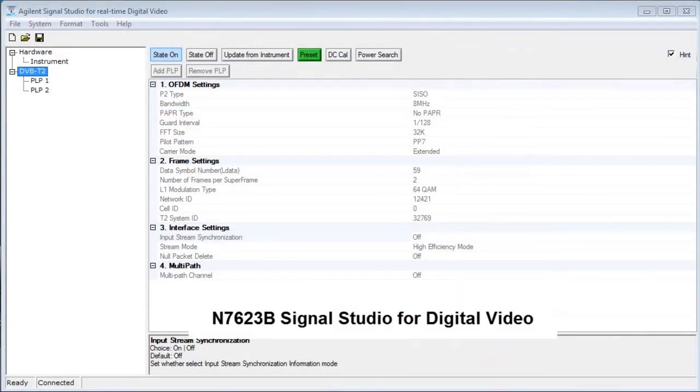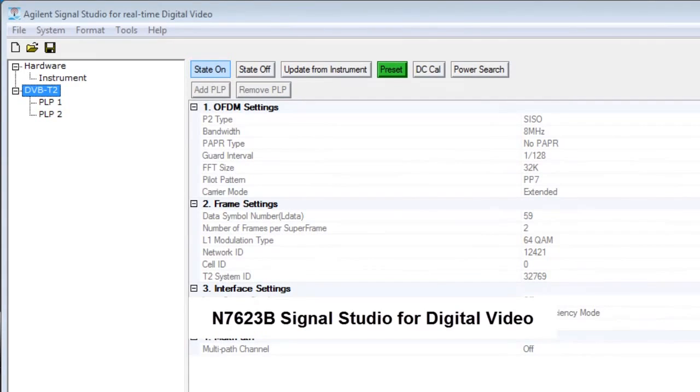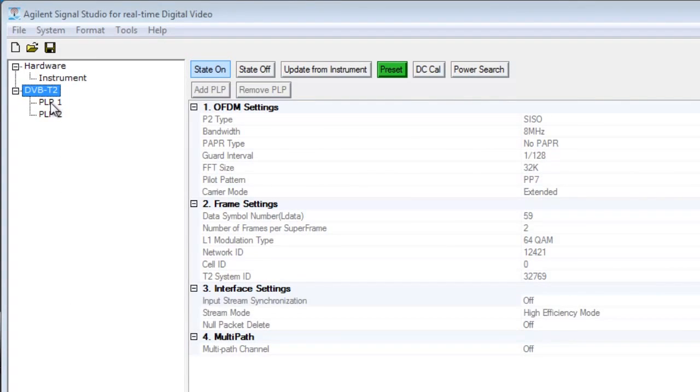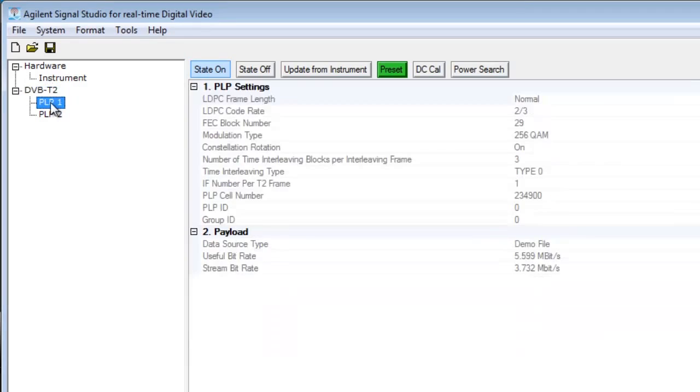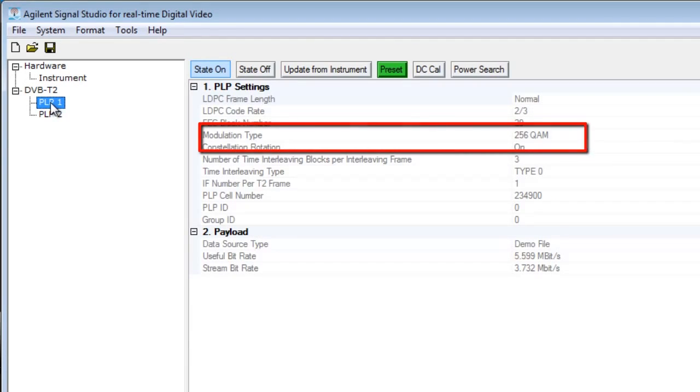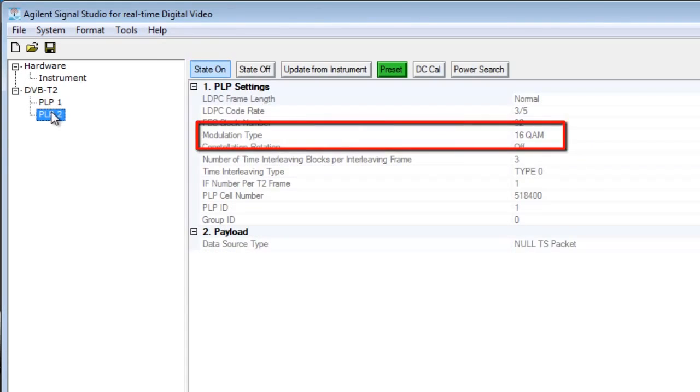The DVB-T2 signal in test includes two PLP with 8 MHz bandwidth. One PLP uses 256-QAM and the other uses 16-QAM.